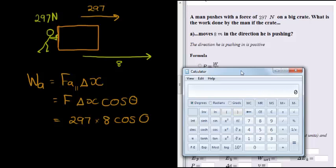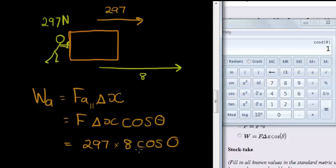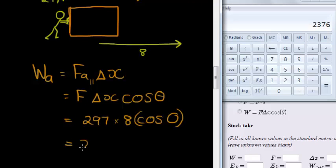Let me start with cos of 0, so you can see. If I work out 0 cos, the answer is simply 1. So this part of my equation is simply calculating to 1. And therefore, I've got 297 times 8 times 1. So 297 times 8. In other words, all I need to do is multiply the force in the direction with the direction's displacement. And that gives me 2376 joules.